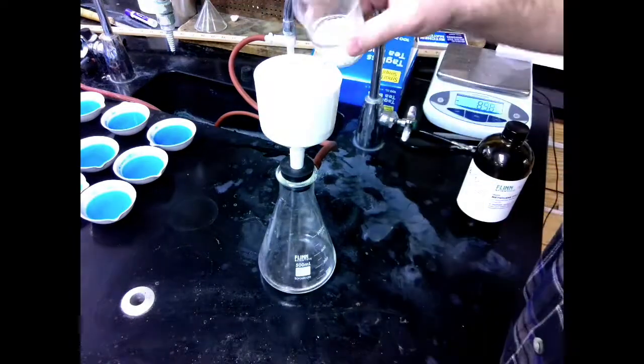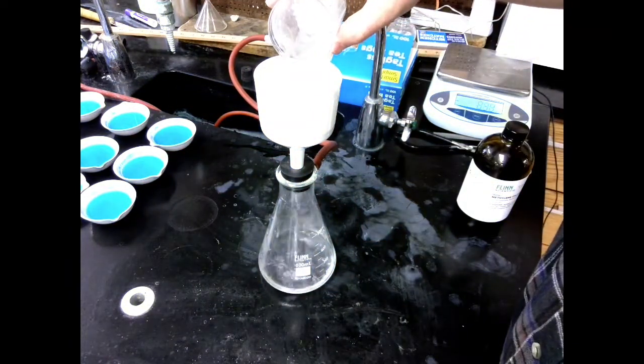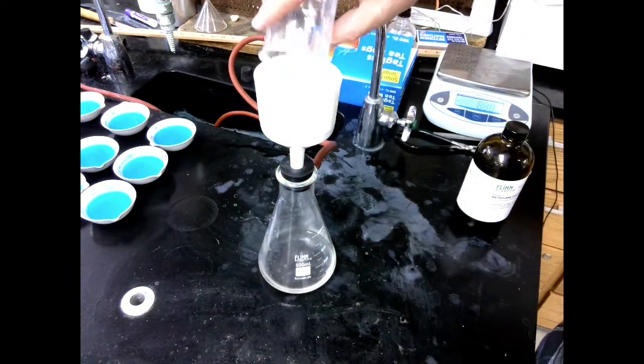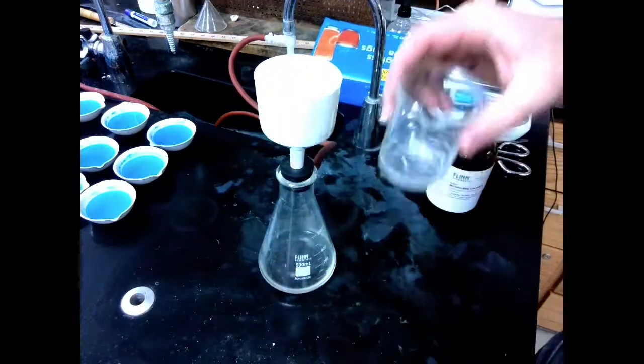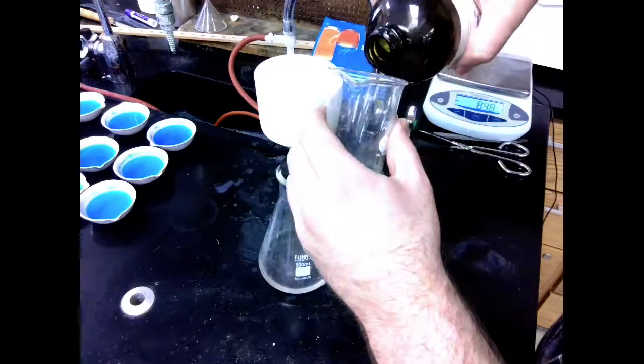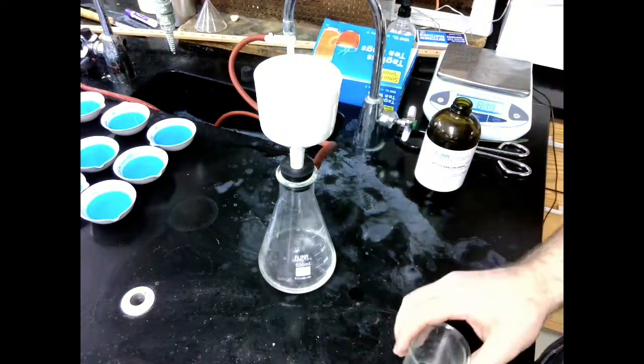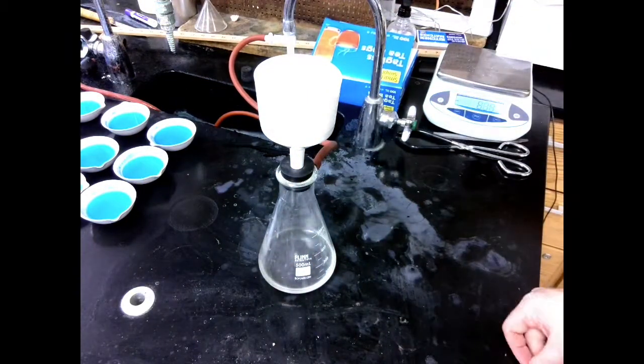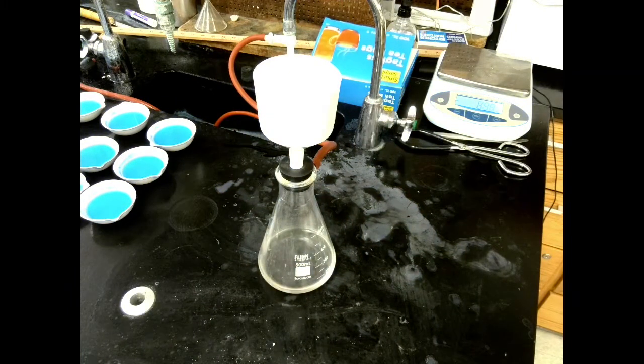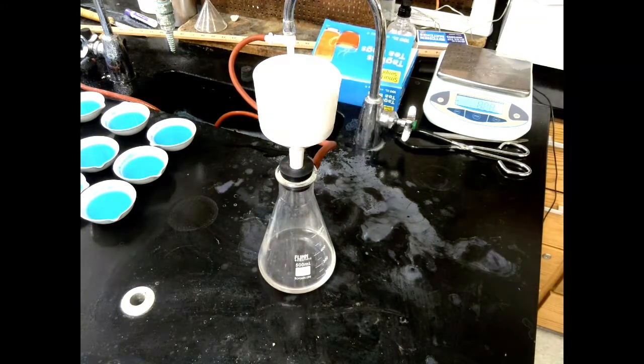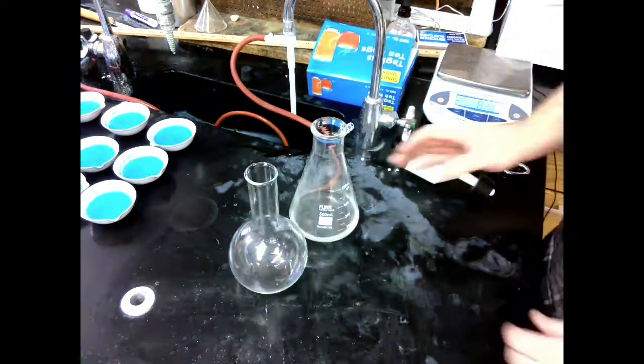And now we need to just get our dichloromethane separated from the calcium chloride. So we set up a Buchner funnel, and we are going to pour the dichloromethane through it. Notice I'm washing the beaker and the calcium chloride a little bit with just a little bit of dichloromethane, just to try and get as much out of it as possible. I don't want any clinging to the sides. And then we're going to take this leftover, and we are going to put it into a Florence flask. 250 milliliter Florence flask.